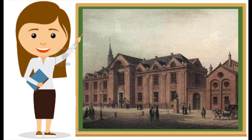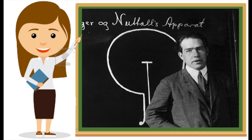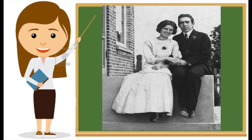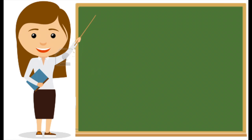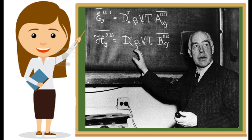In 1903, Bohr enrolled at the University of Copenhagen to study physics, and he earned his doctorate in physics in 1911. A year after, he got married to Margaret Norland and they had six sons. Soon after, he became a professor at Copenhagen University in 1916.